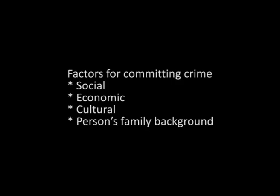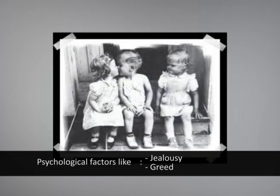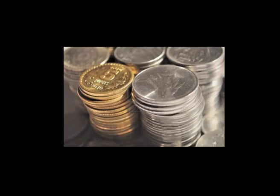In this section we shall discuss crime, corruption, and their causes. There are a variety of factors which lead a person to commit a crime — mainly social, economic, cultural, and family background. There are also psychological factors like anger, pride, jealousy, greed, and revenge that may provoke a person to commit a crime. Some people desire to attain wealth quickly and are manipulated by people with powerful political backgrounds to commit crime for money.